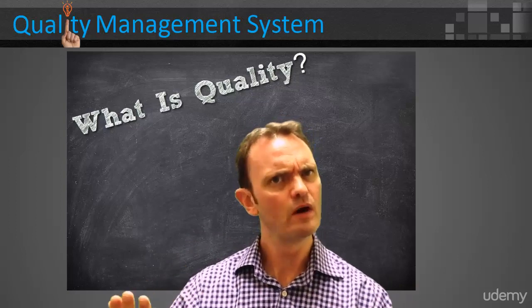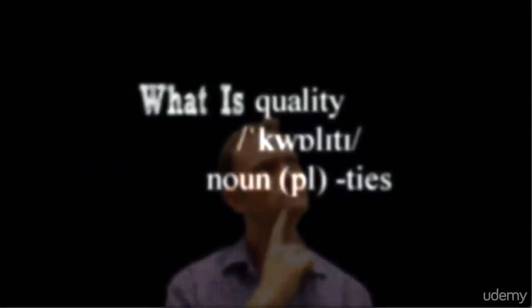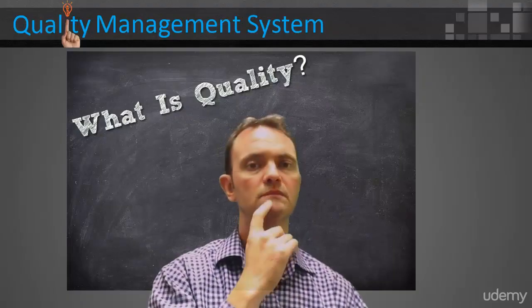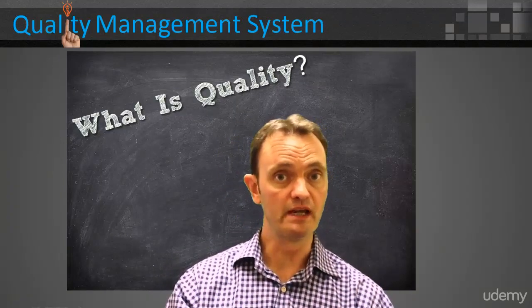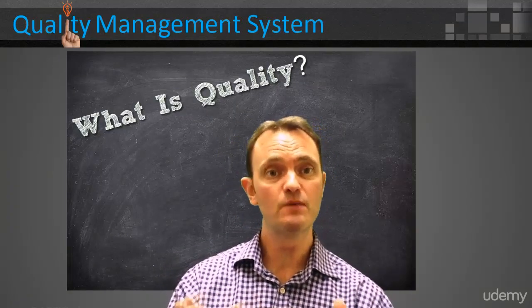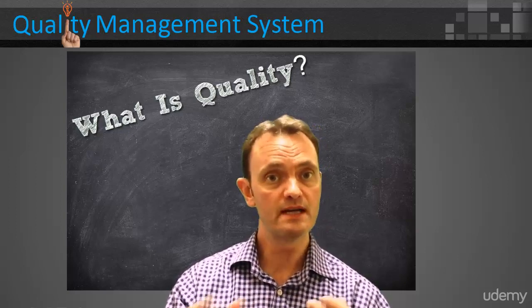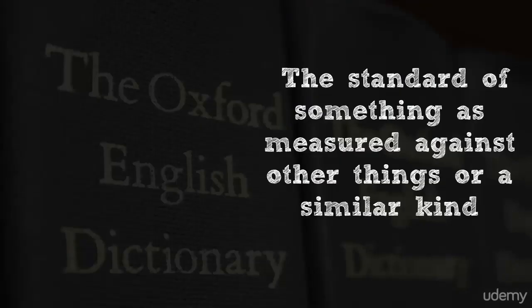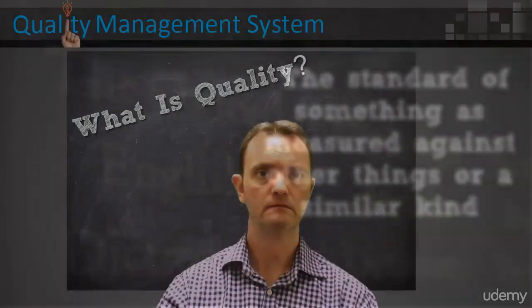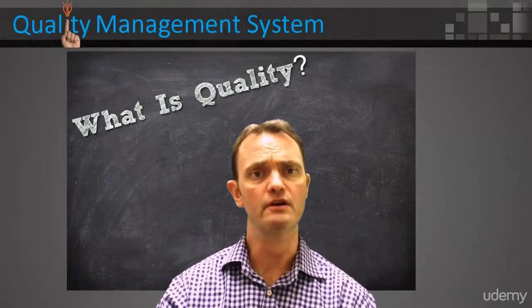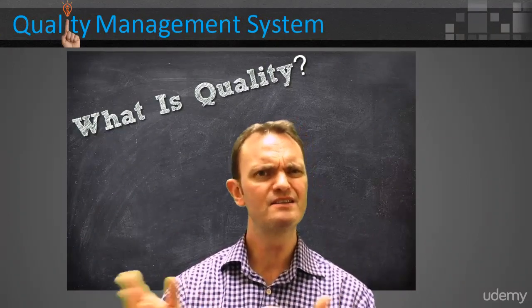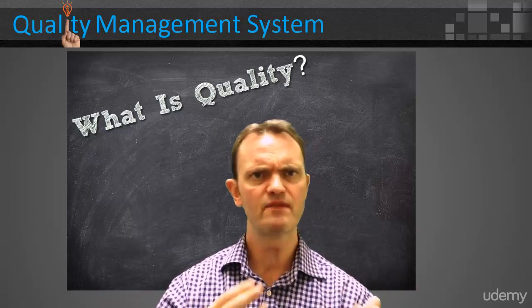So, how do you define quality? The first use of the word quality can be found as early as the mid-12th century, derived from the Latin qualitatum. The Oxford English Dictionary defines quality as the standard of something as measured against other things of a similar kind. That's great — we now have a definition. Measurement sounds good, we like measurement, but measured against similar kind — that seems very subjective.